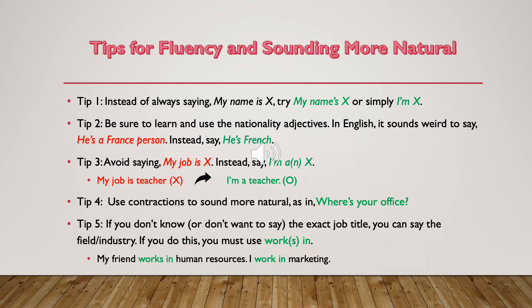Tip two: use nationality adjectives correctly. We don't say 'France person' — in English we say 'he's French.' If you're going to be talking about a country, make sure you know how to make an adjective out of that nationality, and if you don't know, look it up online. So not 'he's a France person' — he's French. Not 'he's an America person' — he's American. You're not a Korea person, you're Korean.